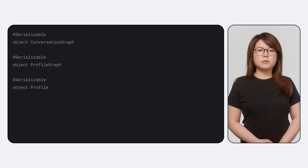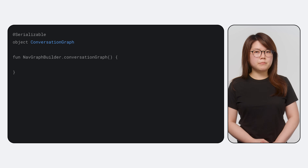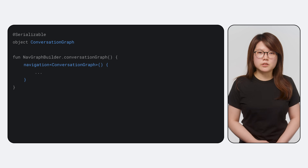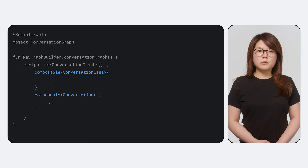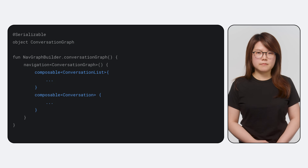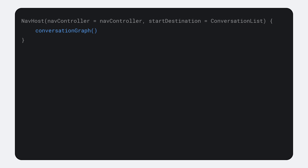Let's look at how to create this in code. First, define the routes for a conversation graph, profile graph, and profile. We then create the nested conversation graph with a NavGraphBuilder extension called conversationGraph. Within this, we call the navigation API and pass in conversationGraph as its unique route. Next, we move the two conversation destinations we created earlier into this nested graph, and set this graph's start destination to ConversationList. Within the original navhost, you can now simply call the conversationGraph function to set up the first nested graph.